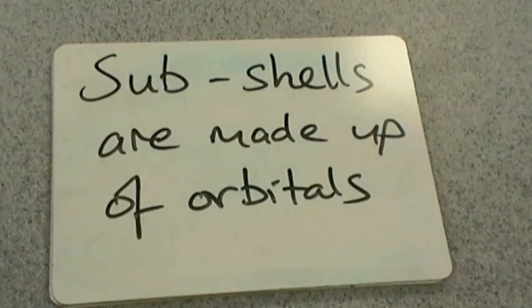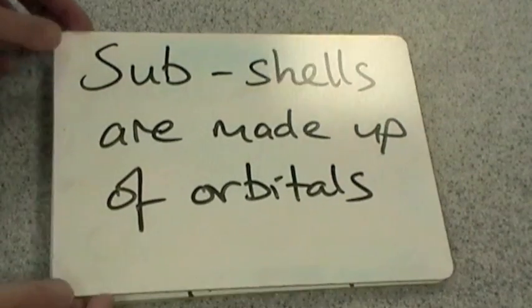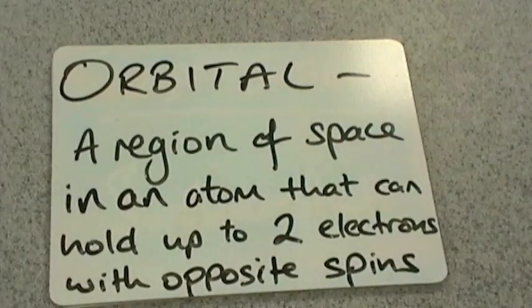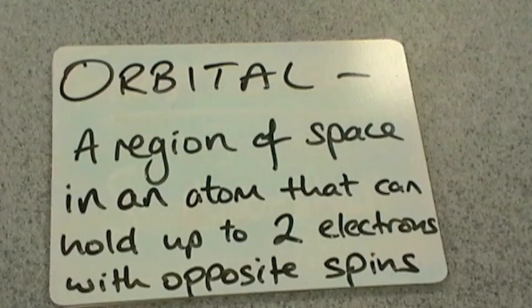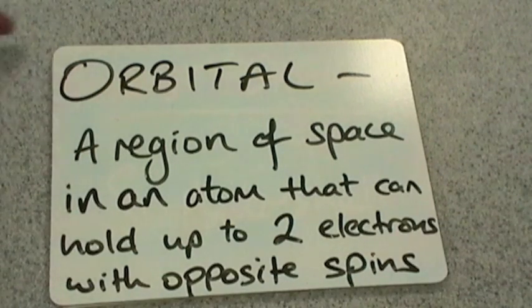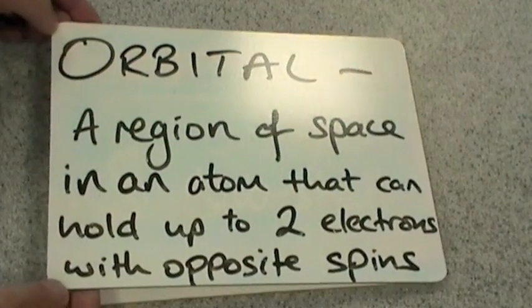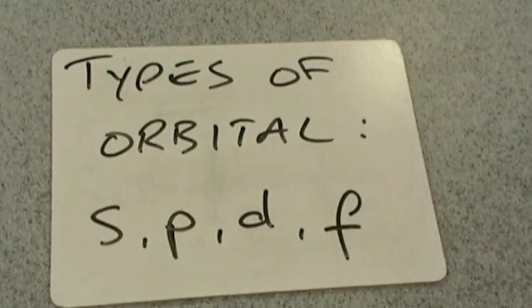So the next thing to say is that these sub-shells are actually made up of orbitals. We'd better say what an orbital is. It's a region of space in an atom that can hold up to 2 electrons with opposite spins. What kind of orbitals can you get? Well, you can get S, P, D, and F orbitals. We've seen those letters already in the sub-shell, so there's a link between the two.